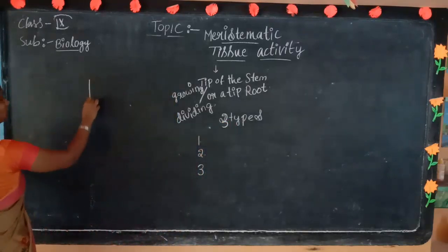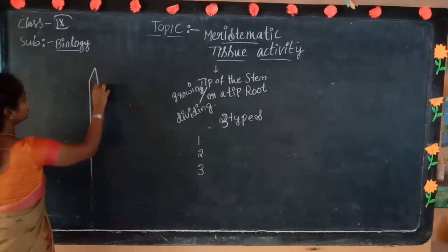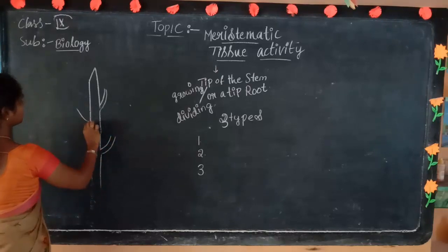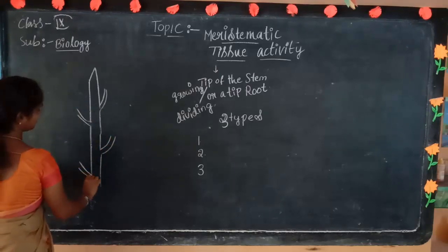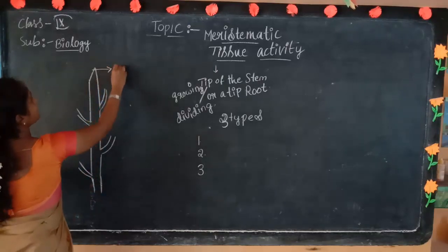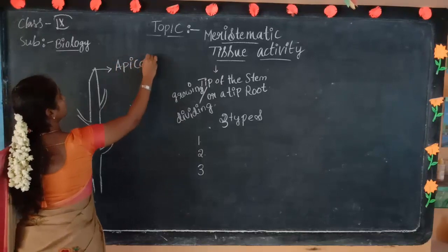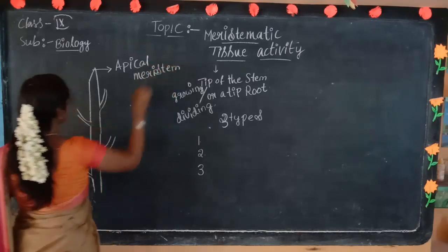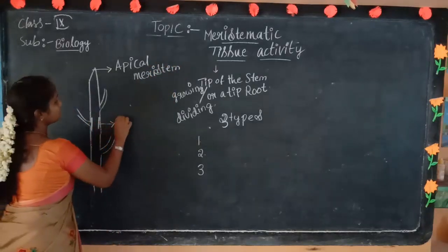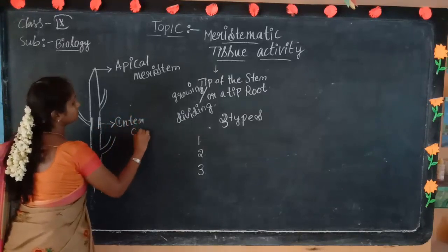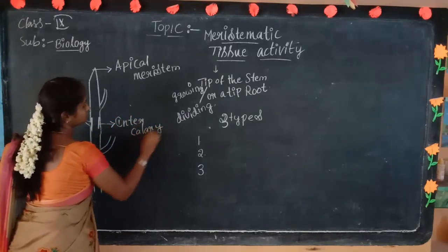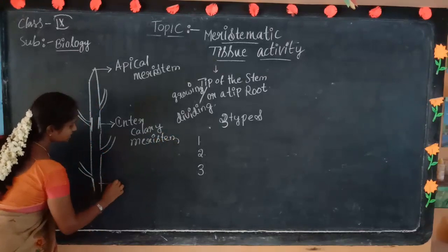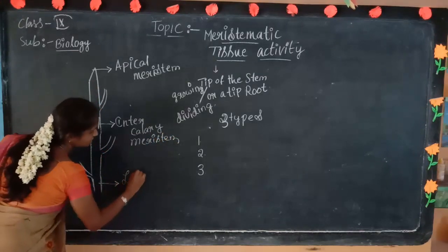Looking at the diagram we already discussed: this is the apical meristem, this is the apical meristem at the top, this is the intercalary meristem in the middle, and this is the lateral meristem on the sides.